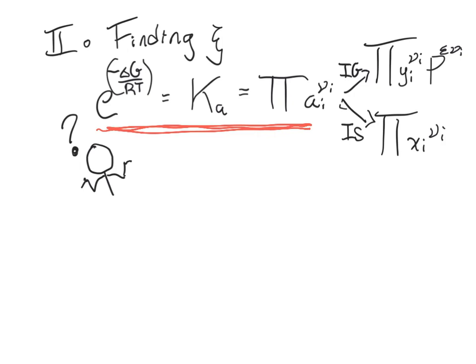And then we observed that if we assume ideal gas, which is a pretty good assumption most of the time, we can replace this with yi to the νi times pressure to the sum of all stoichiometric coefficients. And if it's ideal solution, which is, as we recall from doing phase equilibrium, not as good an assumption for quite a lot of things, then that's merely just xi to the νi.